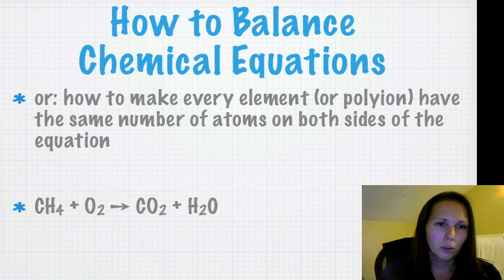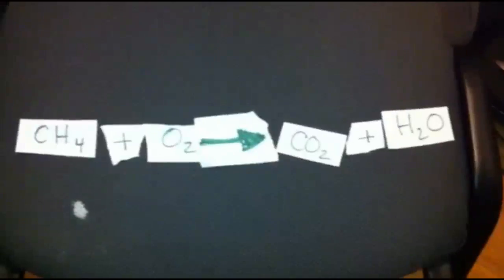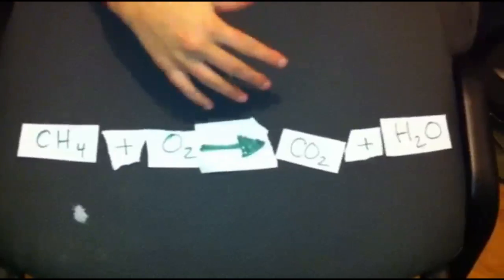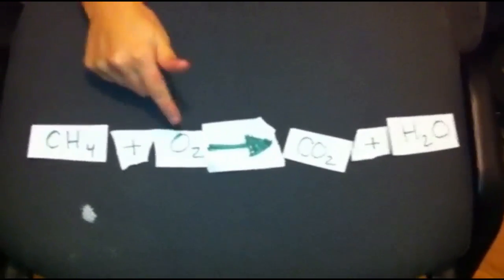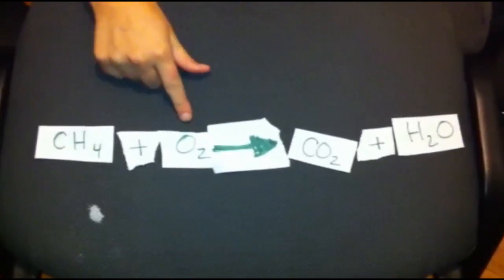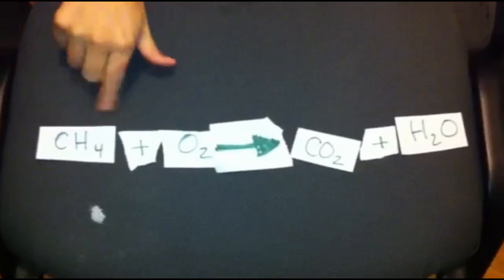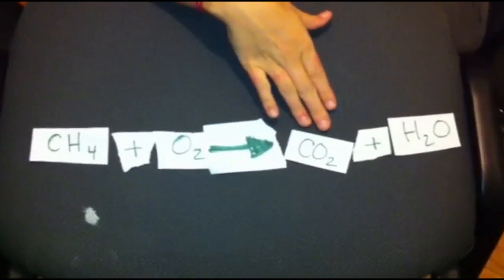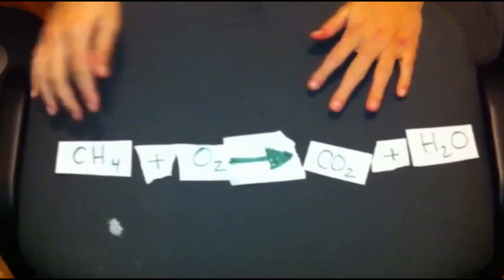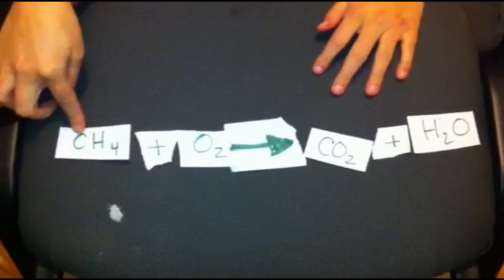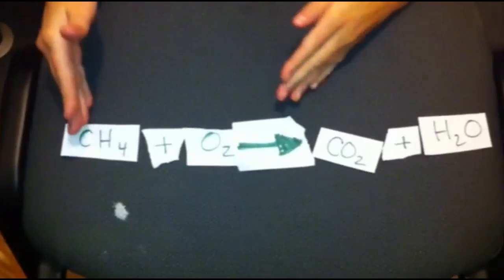Let's look at a combustion reaction. This is an unbalanced equation for a combustion reaction of methane and oxygen. Oxygen is always present in a combustion reaction, as is a CH molecule. This one happens to be methane, which is CH4. The products in a combustion reaction are always CO2 and H2O - carbon dioxide and water. We can tell just by looking that there's one carbon on each side, so we don't have to worry about that.